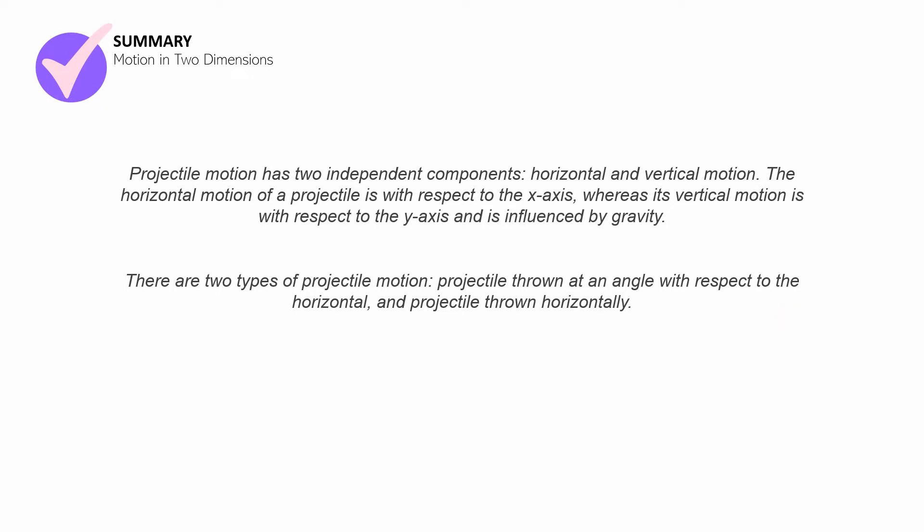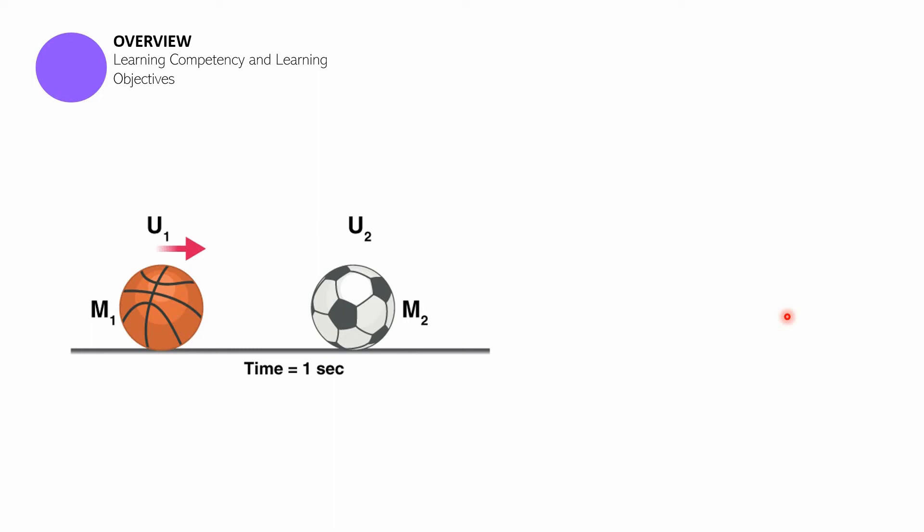Those two are our summary statements for motion in two dimensions. So let's now move on to the last part of this session. The last part of this session is where we are going to have an overview of the next book, which is book number 19. So we will be discussing first in this part of the session, what are the learning competencies and learning objectives that you need to keep in mind or you need to master in book number 19. As you can see, in this illustration, there are two different types of balls that have different types of masses and different velocities. This basketball ball is moving towards this soccer ball, which is at rest. And then the time that it took for them to collide is only one second.